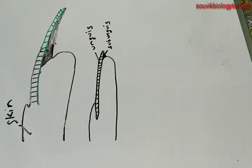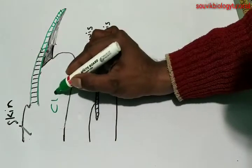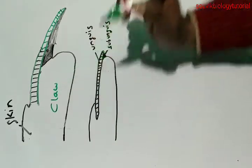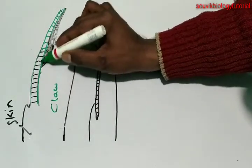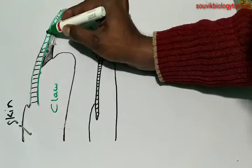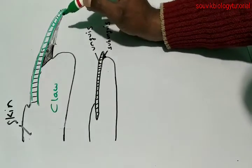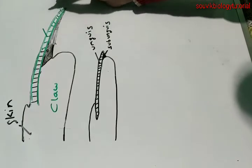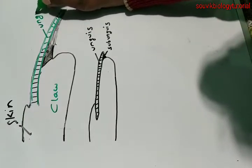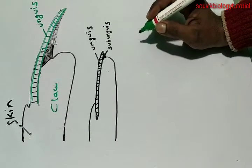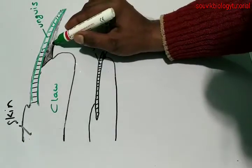Hello and welcome back everyone. In this video I am discussing the basic difference between claws and nails. A claw is made by a hard, pointed, narrow and horny dorsal plate which is known as unguise, and a less hard ventral structure or ventral plate which is known as sub-unguise.